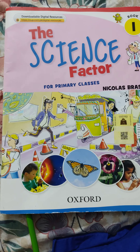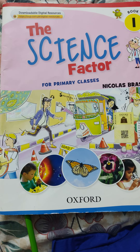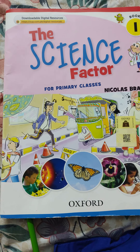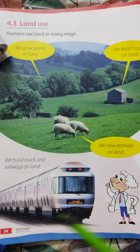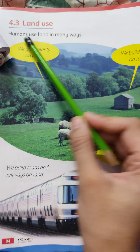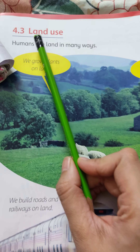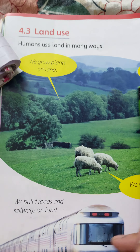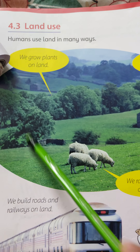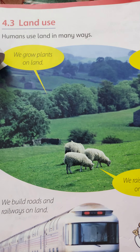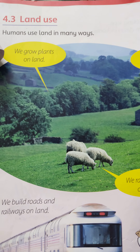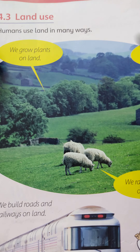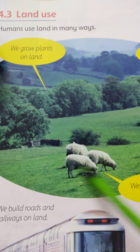Assalamu alaikum, Grade 1! Take out your science vector book and open to page number 34. Today our topic is land use. What is land? The part of the earth's surface that is not covered by water — this surface is called land.